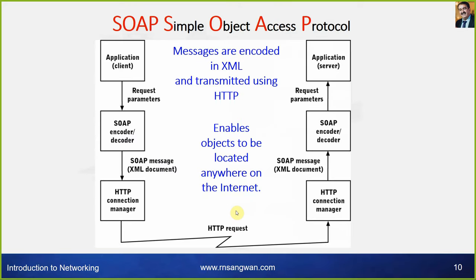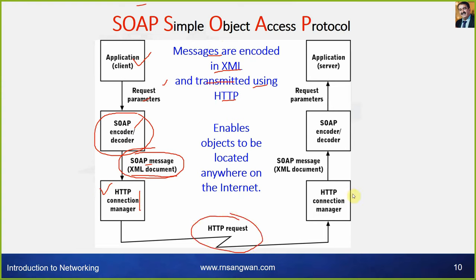SOAP — Simple Object Access Protocol — encodes messages in XML and transmits them using HTTP. The client application requests some parameters, and the SOAP encoder or decoder creates a SOAP message as an XML document. This XML document is transported via an HTTP request. At the receiving end, the HTTP connection manager pulls the message, decodes the XML document, extracts the request parameters, and the application server uses that data. SOAP enables objects to be located anywhere on the internet.